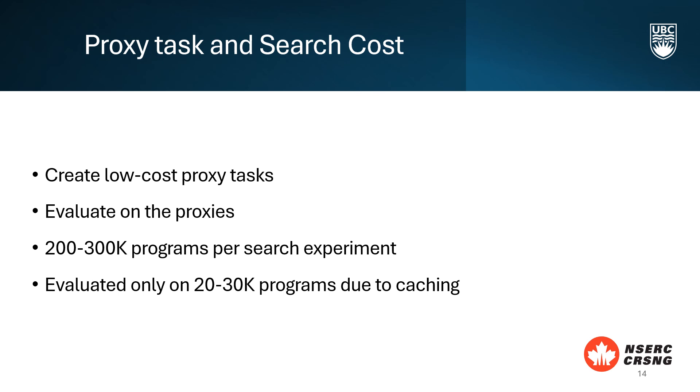In each search experiment, around 200 to 300,000 programs are generated. However, with the help of abstract execution and caching, only about 20 to 30,000 programs need to be evaluated in detail. This significant reduction in the number of evaluations is crucial for making the search process both time and resource efficient.